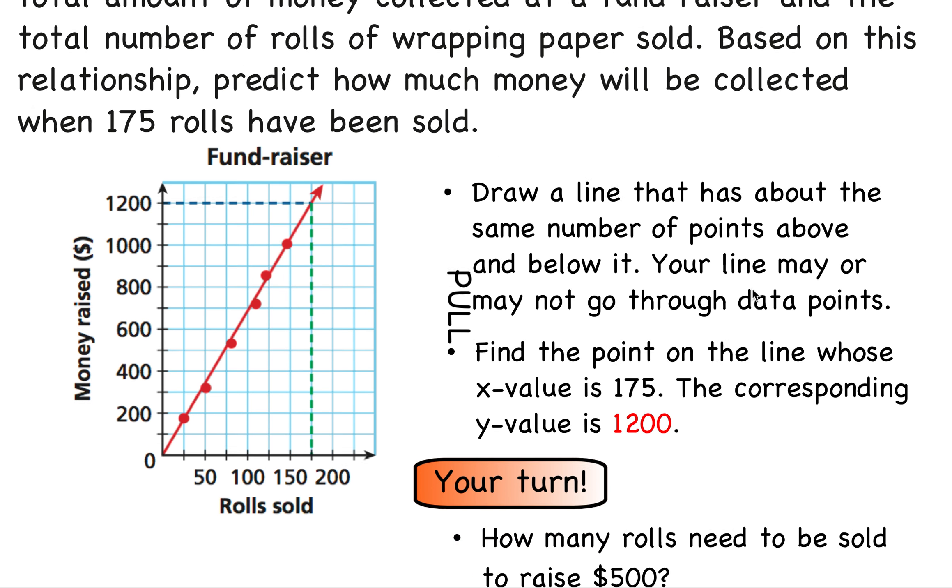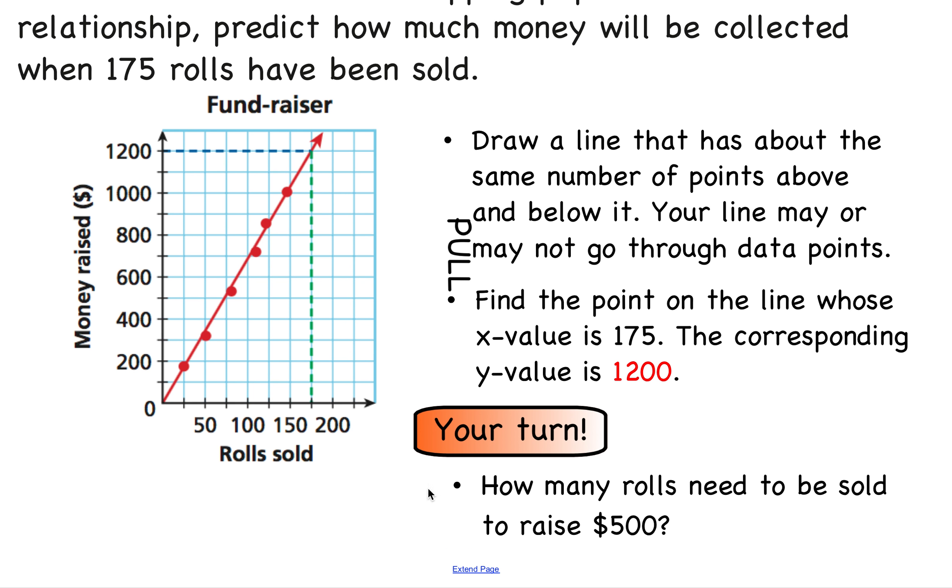So I have one more question for you here. Using this table of values or this graph of data, how many rolls need to be sold to raise $500? So see if you can interpret that and bring that answer to class. That'll do it for scatter plots and trend lines. See you next time.